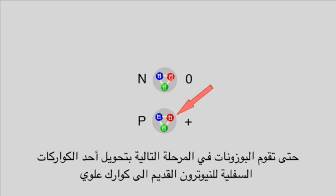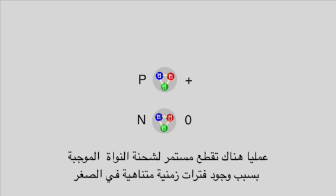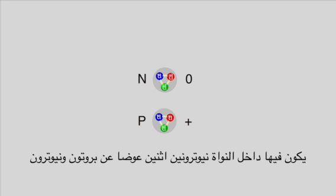The atom remains without a proton for a short period of time. Then, in the next step, the bosons transform the lower quark into an upper quark in the neutron, making it a positively charged proton. So practically, there is a constant alternation between the positive and the neutral state of the nucleus. This is due to the existence of two neutrons instead of one neutron and one proton for very short periods of time.